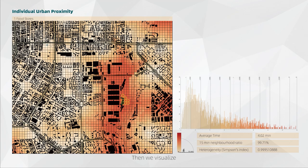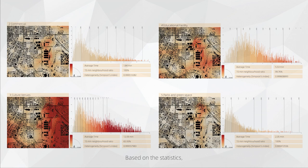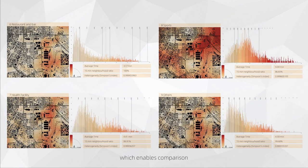Then we visualize the value as heatmaps. This heatmap shows the time for each grid to reach the closest service based on the categorization. The proximity heatmap highlights the zones where the grid needs to spend more than 15 minutes, and this helps to filter the unqualified cells based on the 15-minute city theory. Based on the statistics, the average time gives the evaluation in general, which enables comparison with other case studies.